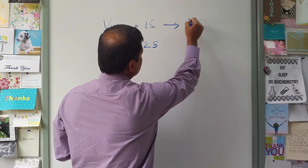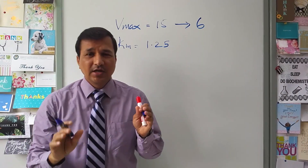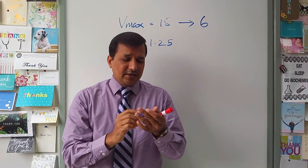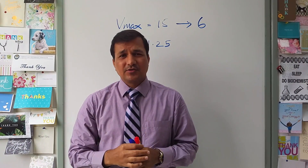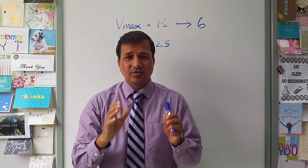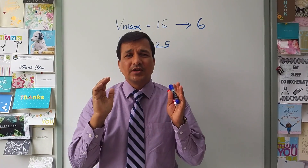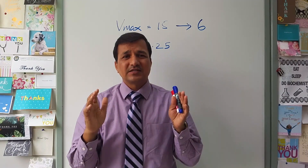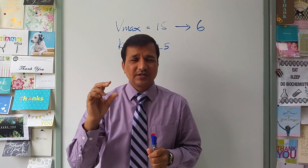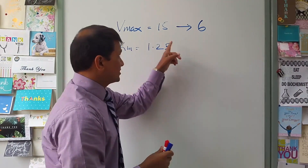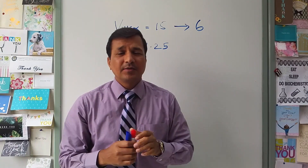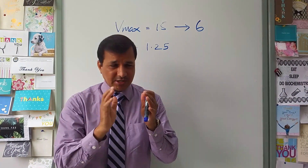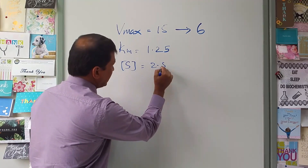Vmax has dropped from 15 units to 6 units in the presence of the inhibitor, whereas Km remains the same. A competitive inhibitor increases the apparent Km without changing Vmax, whereas a non-competitive inhibitor decreases Vmax while Km remains the same. Since Vmax dropped and Km is unchanged, this is non-competitive inhibition. The substrate concentration given in the question is 2.5 millimoles.